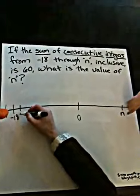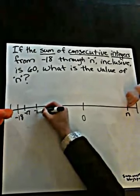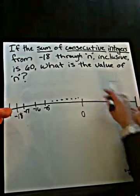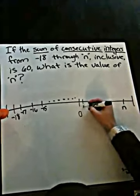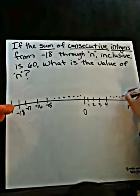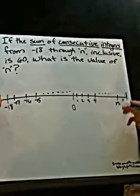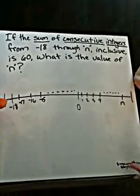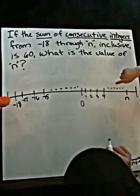The first thing we could do, if we wanted to do this in a very slow way, is simply add up all the numbers. We could do negative 18 plus negative 17 plus negative 16 plus negative 15, and so on, all the way to zero. And then we could add to that 1, 2, 3, 4, and so on, until we reach a total of 60. That would take forever. And on SAT, you only have a couple minutes. So we need to look for a shortcut.